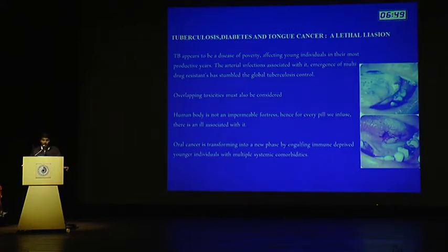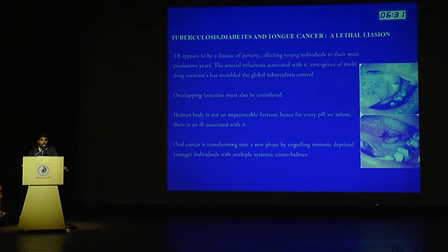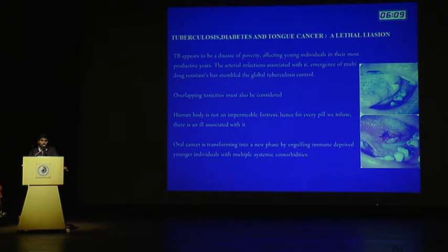Another interesting case involves tuberculosis, diabetes and tongue cancer. A 28-year-old lady initially complained of a non-healing ulcer in the left lateral border of the tongue. She was a known tuberculosis patient. Failure of symptom remission with further difficulty in swallowing led to further evaluation. She had discontinued tuberculosis treatment due to financial constraints, but frequent bouts of cough and sleeplessness compelled her to restart. During the course of treatment she progressed to a diabetic state — diabetes and tuberculosis are often interrelated — and she subsequently succumbed to tongue cancer. In such patients, overlapping toxicities must be considered. For every pill administered, there is an associated ill effect.